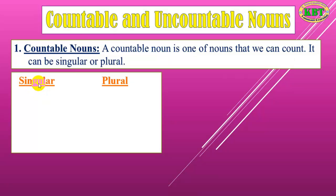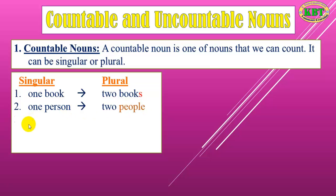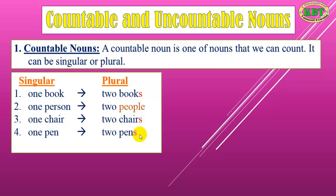Let's see the words that are countable nouns. This is singular and this is plural. Number one: one book, two books. Number two: one person, two people. Number three: one chair, two chairs. Number four: one pen, two pens. Number five: one house, two houses.